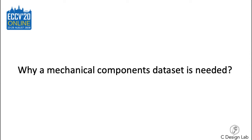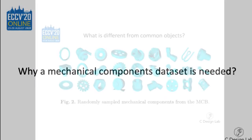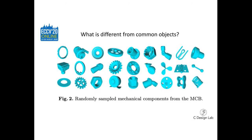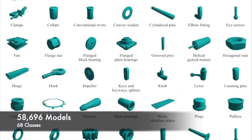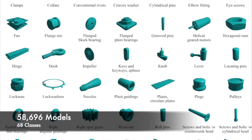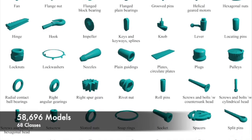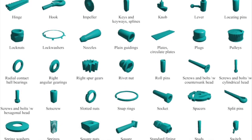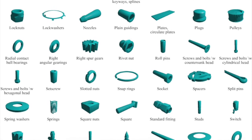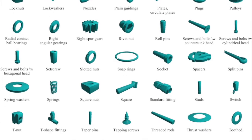Why a mechanical components dataset is needed: Mechanical components, as shown in the figure, have sharp edges and high genus, which distinguish them from common objects. Furthermore, mechanical components are categorized by their detailed shape, whereas common objects are mainly identified by their general shape. Our dataset enables data-driven feature learning for mechanical components. Exploring the shape descriptor for mechanical components is essential to computer vision and manufacturing applications.